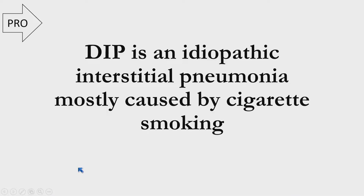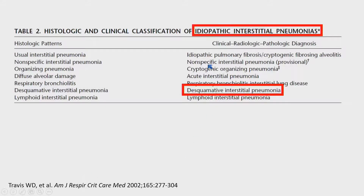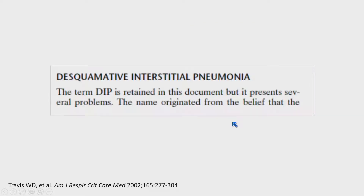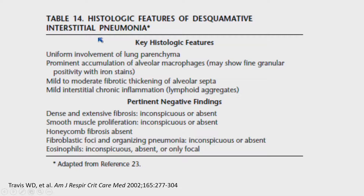Does that make any sense? It's idiopathic, mostly caused by cigarette smoking. In fact, it is classified under the idiopathic interstitial pneumonias in the ATS/ERS classification. Even they knew they were saying something that didn't make sense, because back in 2002 they said, 'The term DIP is retained in this document, but it presents several problems' — and they listed all those problems and then kept the term. If you look from one paper to another, there's absolutely nothing consistent between the various definitions.